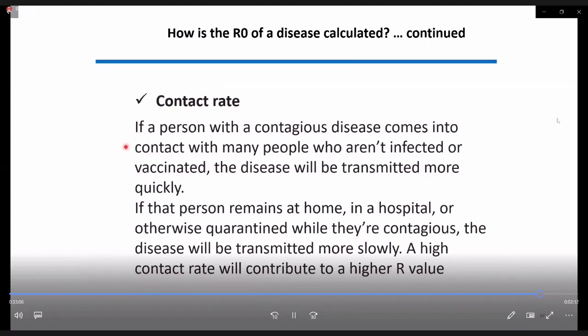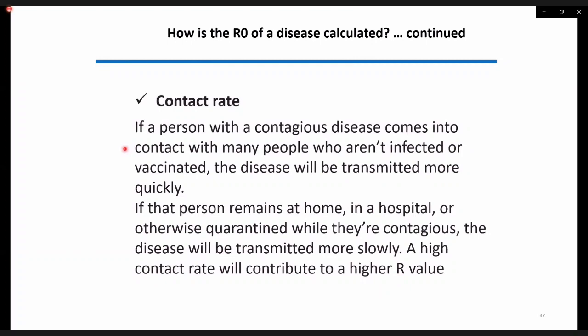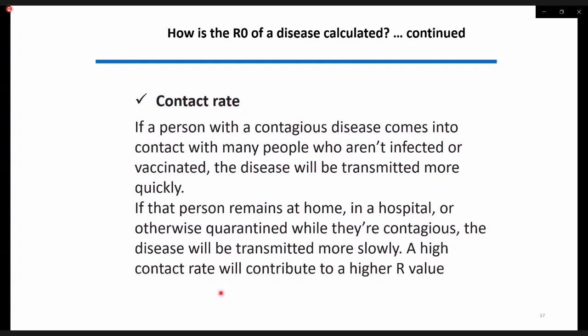The next consideration is the contact rate. If a person who has a contagious disease comes into contact with many people who are not infected or vaccinated, the disease will naturally be transmitted more quickly. If that person remains at home, in a hospital, or otherwise quarantined while contagious, the disease will be transmitted more slowly. A high contact rate will contribute to a higher R value.